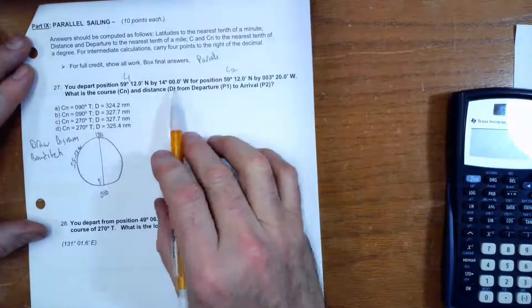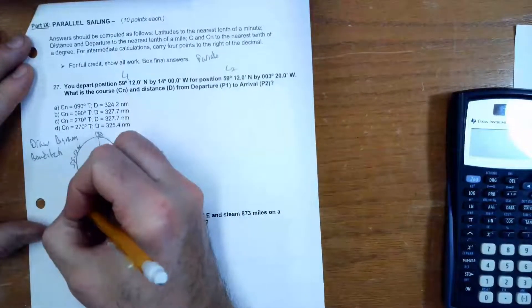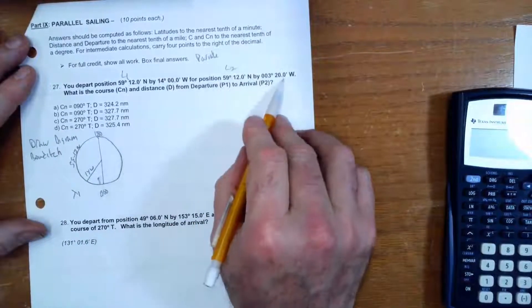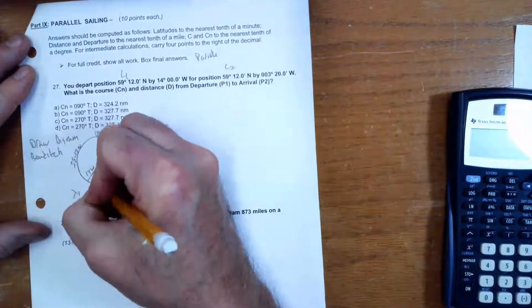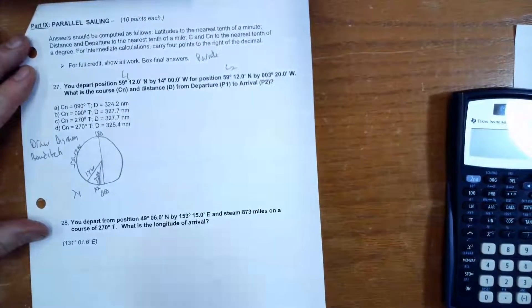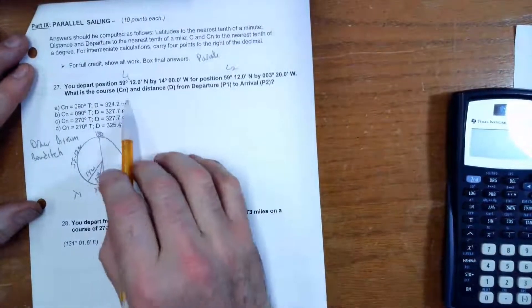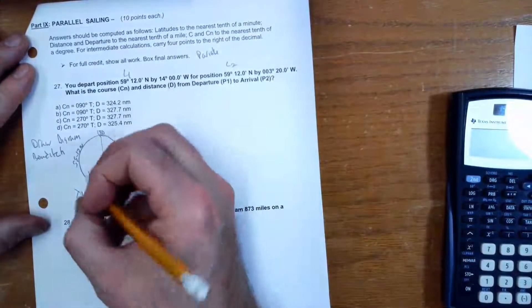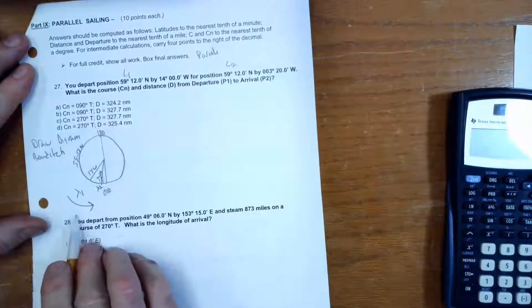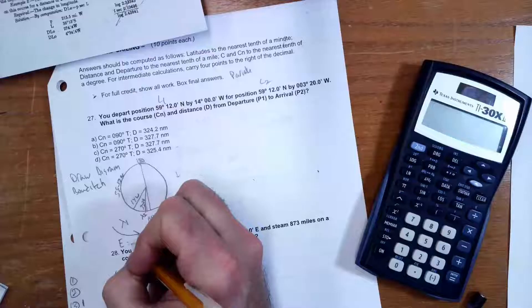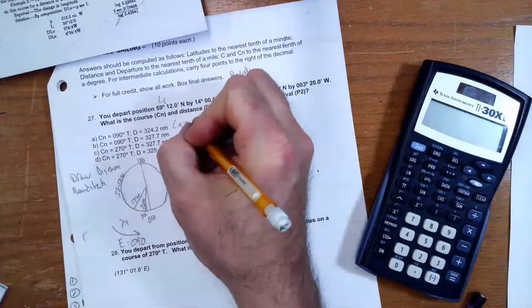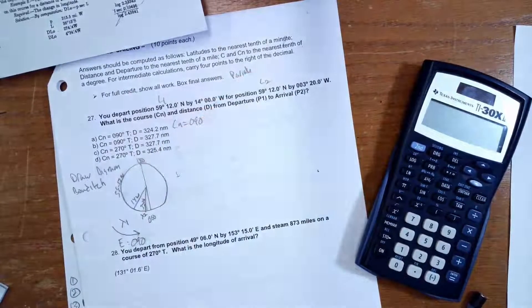So 14° west is over here, that's longitude 1. And longitude 2 is 3°20' west, so that's over here. So what they want to know is what is that course and what is that distance? Well, I'm going to go from here to there. So that is counterclockwise, that's east. So CN is 090°, that's the course we're doing.